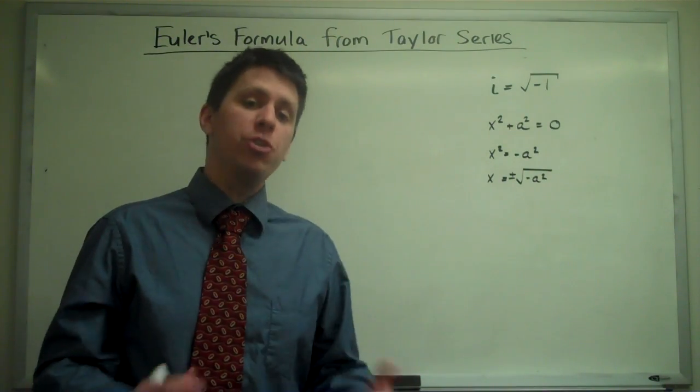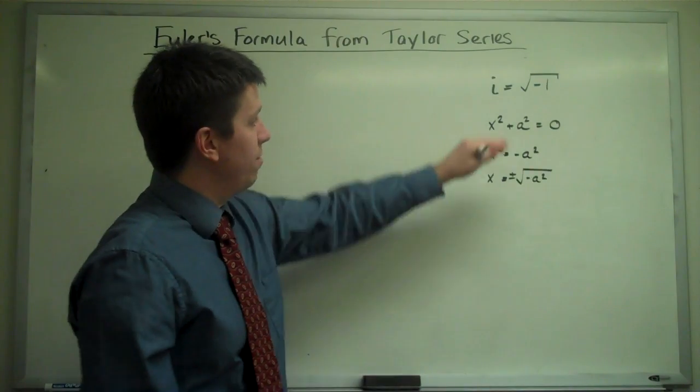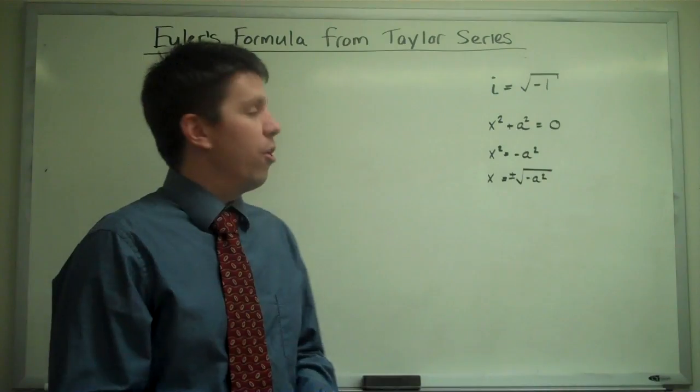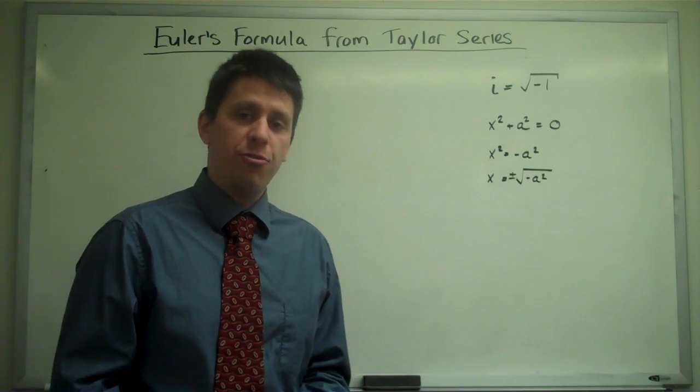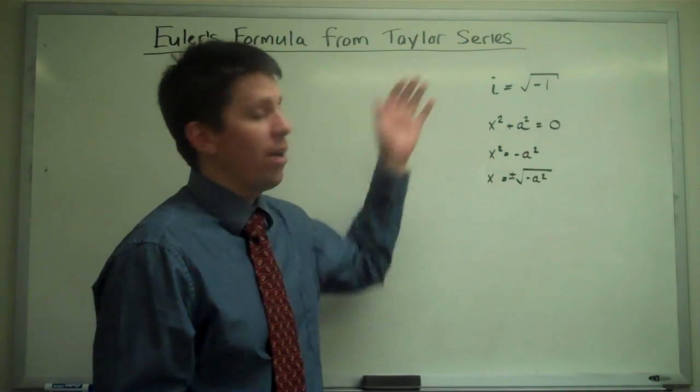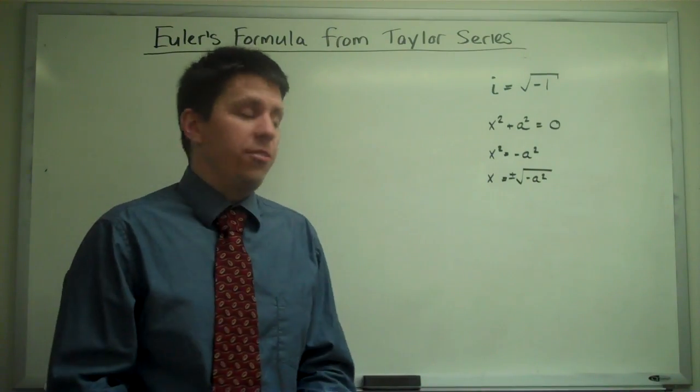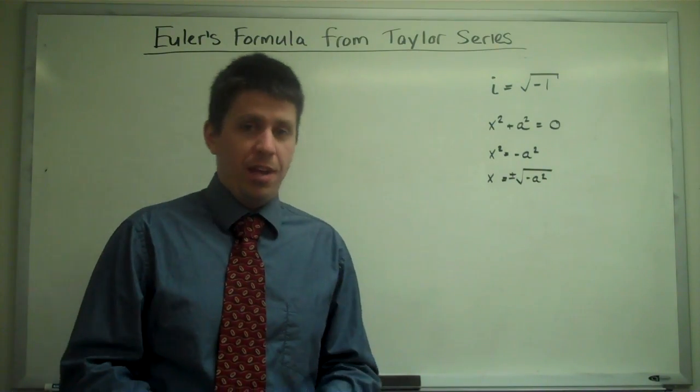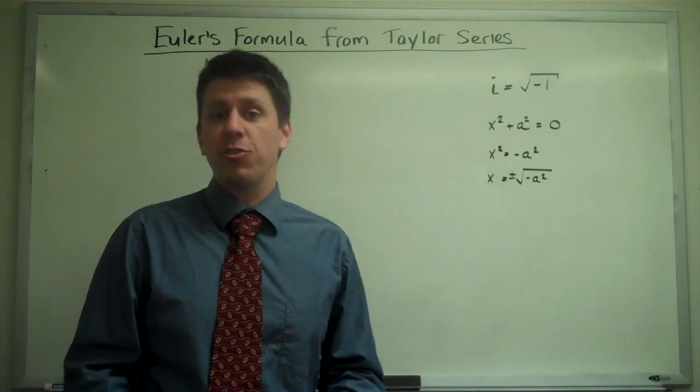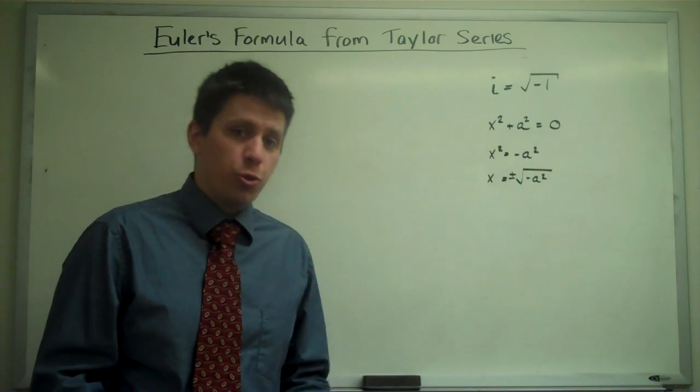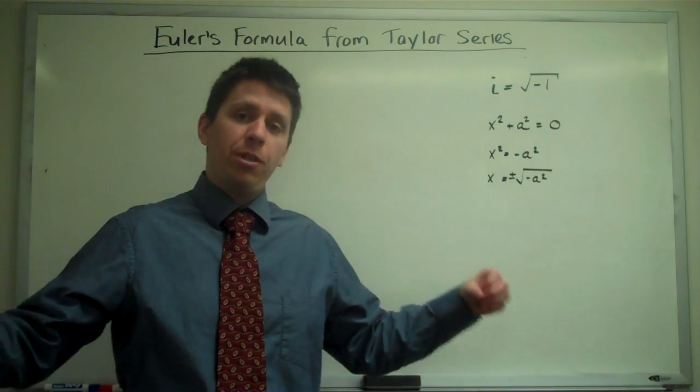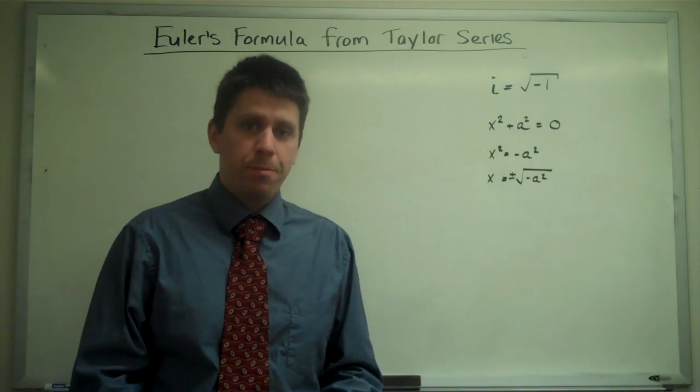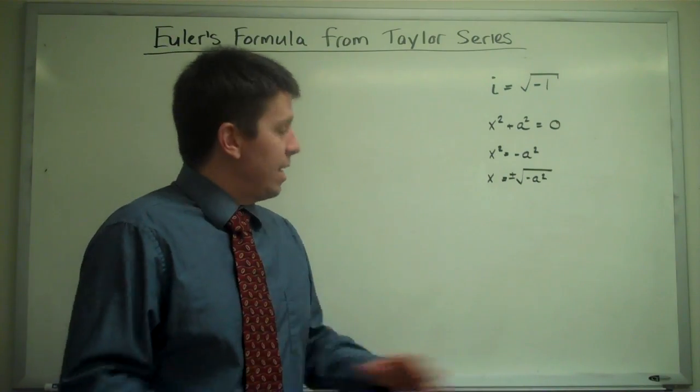And so this imaginary number is introduced, and it turns out that with the introduction of this additional number i, you can solve any kind of algebraic problem. There are no further complicated numbers that you need to introduce to solve algebraic problems that have i's in them. You're sort of done. It's the final entry in a series of numbers that starts with the integers and proceeds on to the rational numbers, fractions of integers, and then irrational numbers, making up the entire real number line. And if you introduce just this one extra type of number, these imaginary numbers, then you can solve any kind of algebraic problem. And that is the topic of the class complex analysis.